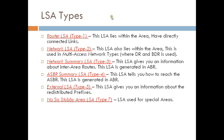Network Summary LSA is Type 3, which gives you information about inter-area routes. If you are in Area 0, it gives you information about Area 1 and other areas. Type 3 LSA is generated by the ABR, that is the Area Border Router.